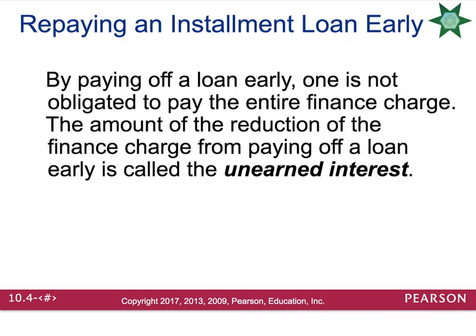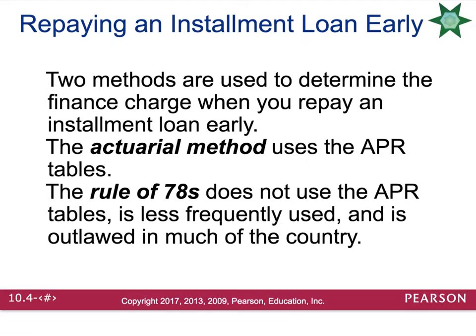Sometimes people like to pay off a loan early. By doing so, you are not obligated to pay the entire finance charge. The amount of the reduction in the finance charge from paying off a loan early is called the unearned interest. There are two methods to determine the finance charge when repaying early: the actuarial method, which uses the APR table (Table 10.2), and the rule of 78s. The rule of 78s is not used very frequently and is outlawed in most U.S. states, so we're going to focus on the actuarial method.